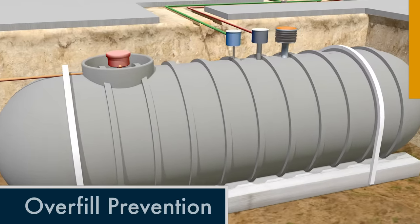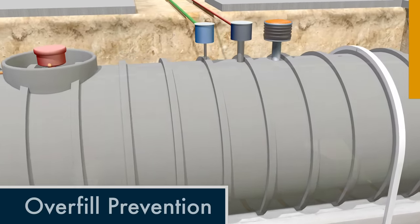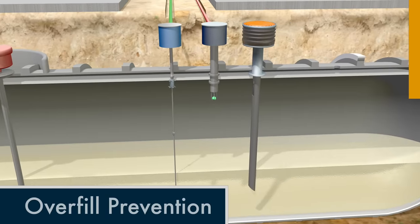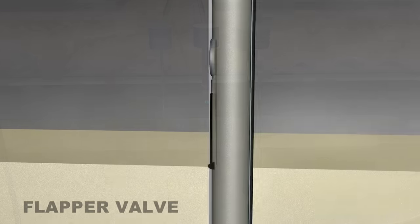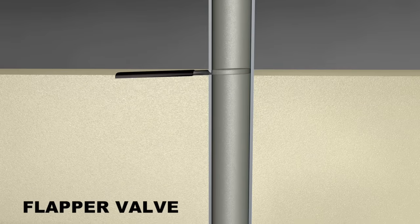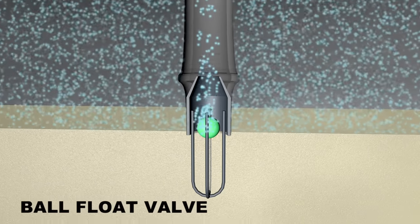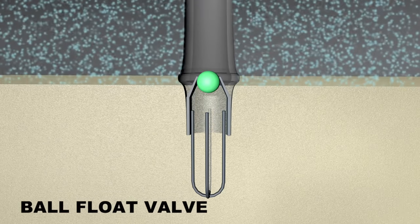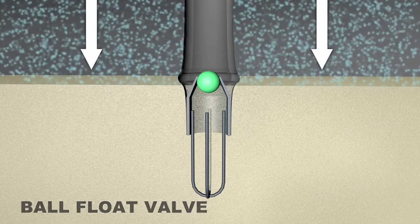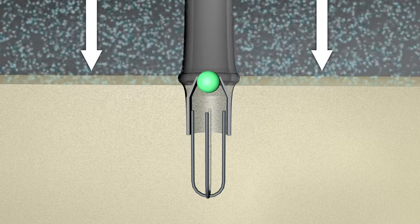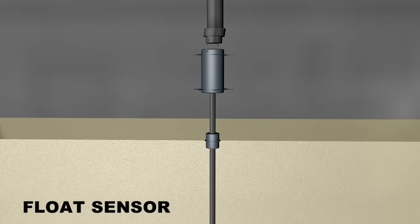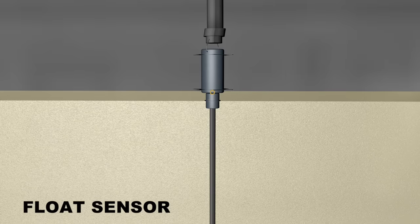As an added measure of safety, today's underground tanks feature a variety of overfill prevention technologies. A flapper valve automatically cuts off the flow of fuel into the tank, while a ball float in the vent pipe prevents vapor from escaping. The pressure of vapor within the tank then prevents additional fuel from entering. A float sensor alerts the operator if fuel reaches the target level.